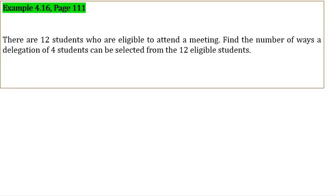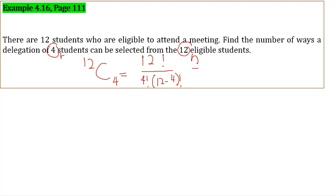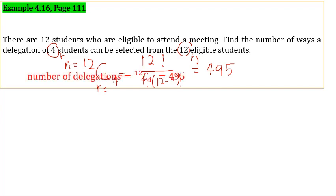Example 4.16, page 111: There are 12 students eligible to attend a meeting. Find the number of ways a delegation of 4 students can be selected. Here n = 12, r = 4. Using 12C4 = 12! / (4! × 8!) = 495. The number of delegations is 495.